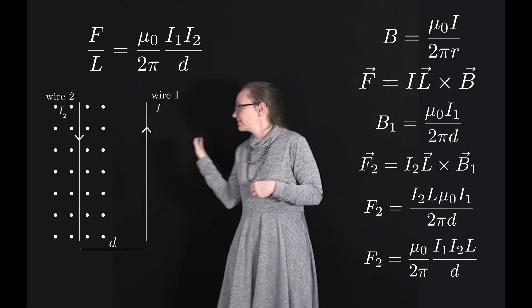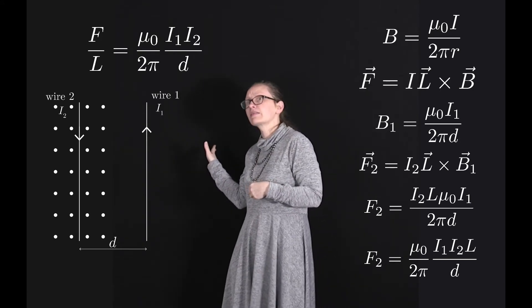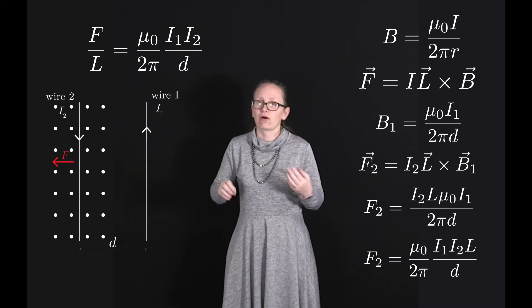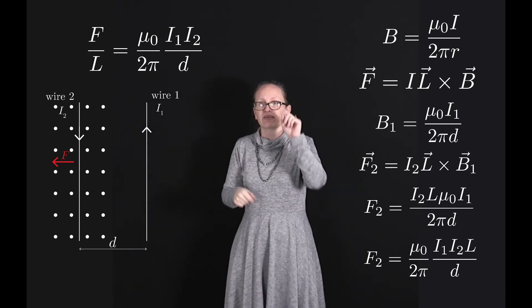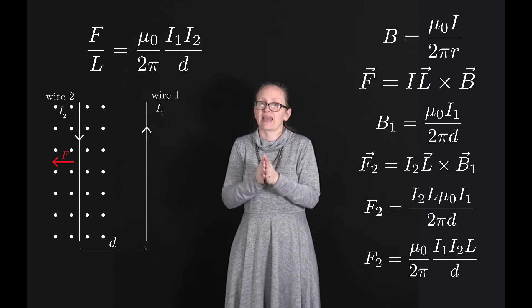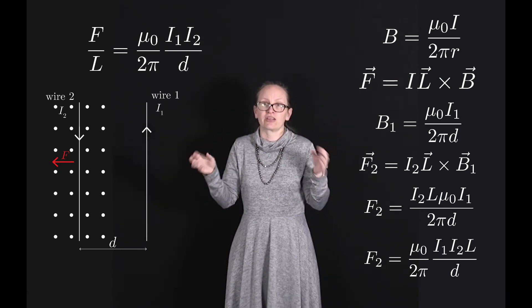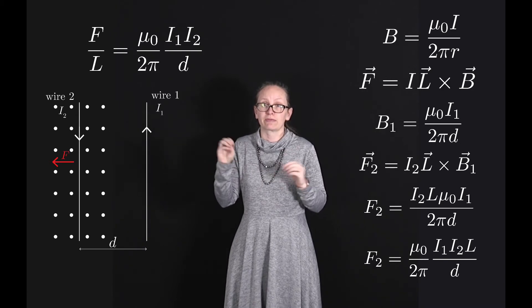we can see that the force in this case is going to be directed away from wire 1. So when the currents flow in opposite directions we're going to end up with a repulsive force, but the numbers haven't changed so the magnitude of that force remains the same.